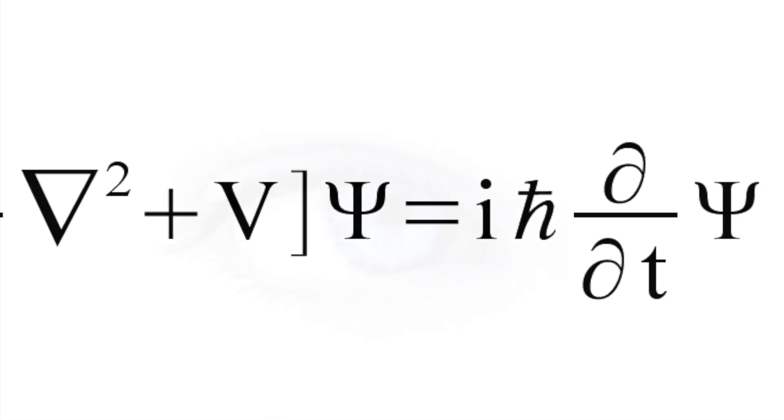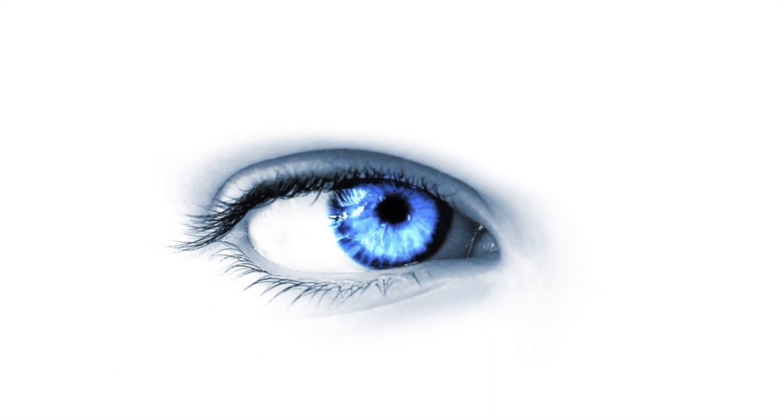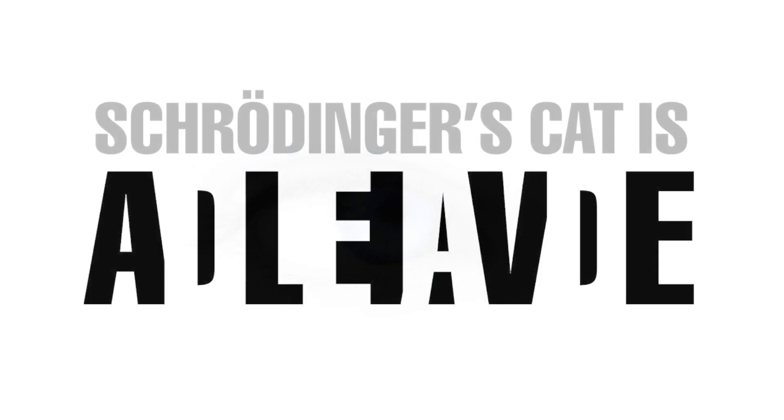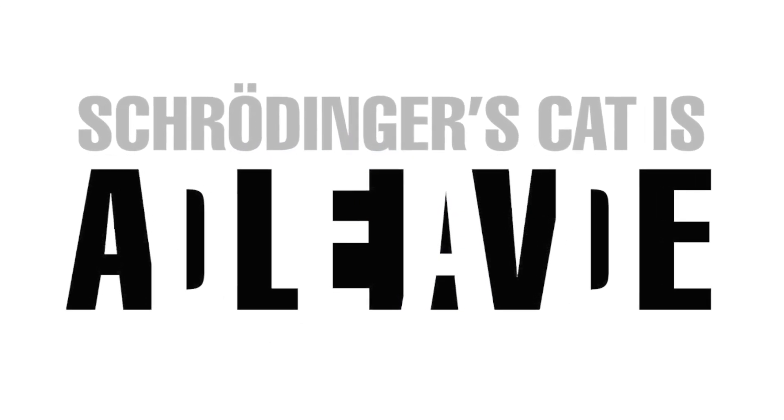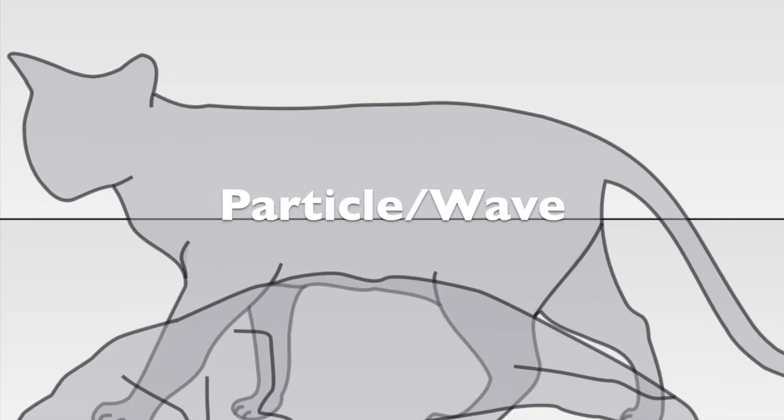That means that as long as nobody opens the box to look at the cat, and therefore indirectly measure whether the radioactive substance has emitted a particle or not, the cat is both alive and dead. This seemed ridiculous to Schrödinger, but in quantum theory the ridiculous is entirely normal.